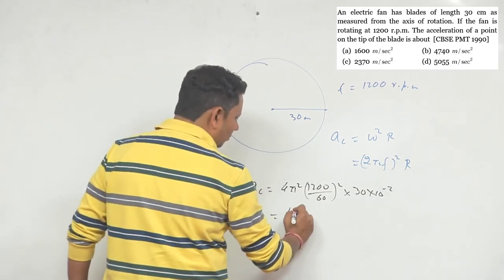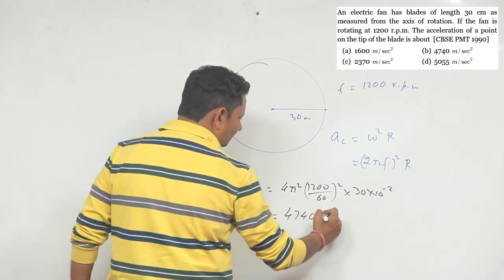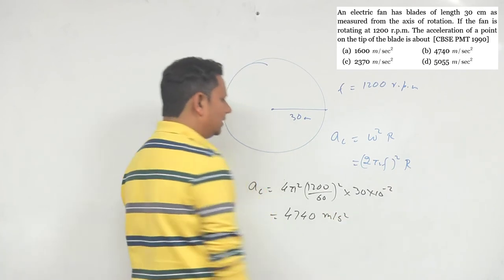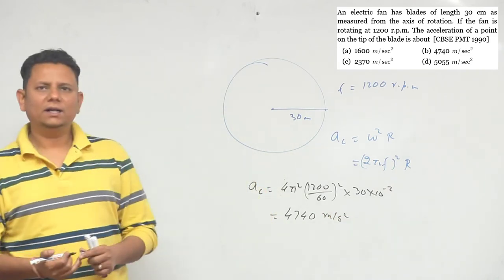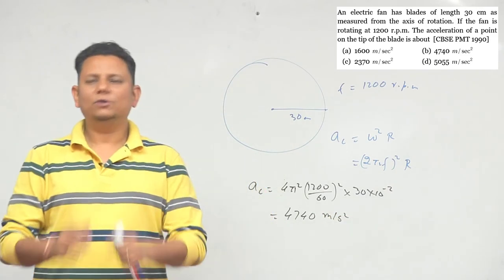So it comes out to be 4740 meters per second squared. So this will be our final answer. Option number B would be the correct choice.